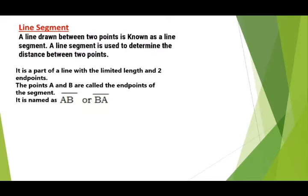A line segment is a part of a line with limited length and two end points. The points A and B are called the end points of the segment. It is named as line segment AB or line segment BA.